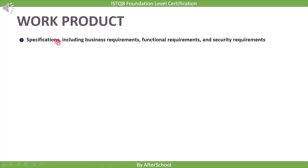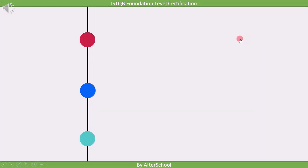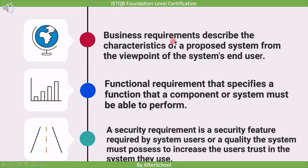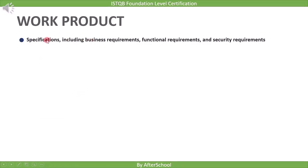The first work product is specifications, including business requirements, functional requirements, and security requirements. Business requirements describe the characteristics of a proposed system from the viewpoint of the end user — it is a high-level requirement from the user's point of view. A functional requirement specifies a function that a component or system must be able to perform — a low-level requirement for the technical team to implement. A security requirement is a security feature required by system users to increase trust in the system.